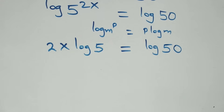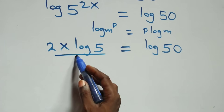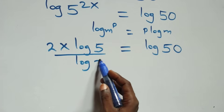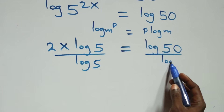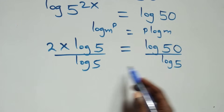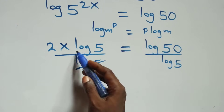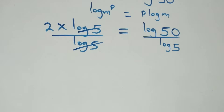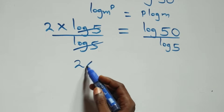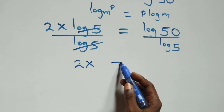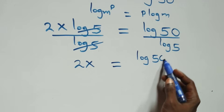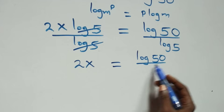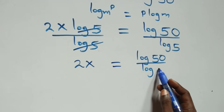Here we divide both sides by log 5 — divide this side by log 5, also divide that side by log 5. Which implies log 5 cancels each other, and we have 2x left, which is equal to log 50 over log 5.